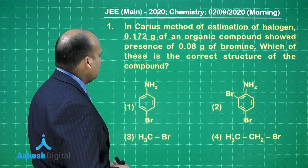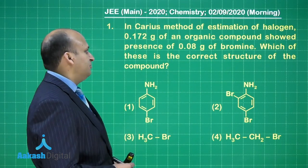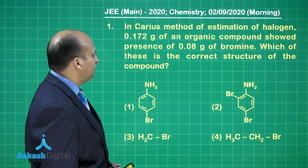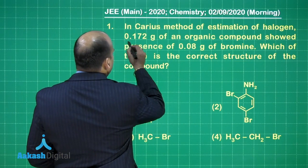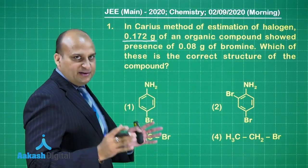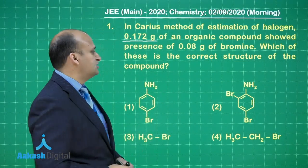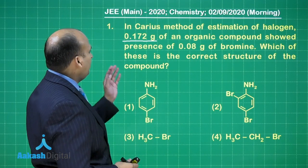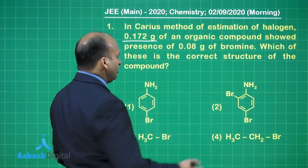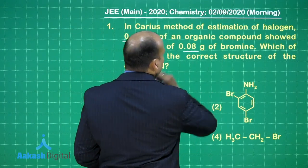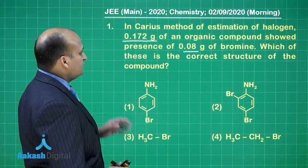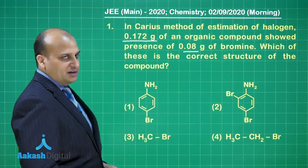The first question is that in the Karius method of estimation of halogen, 0.172 gram of an organic compound showed the presence of 0.08 gram of bromine. Which of these is the correct structure of the compound? It is better that we underline the data which is important for us.